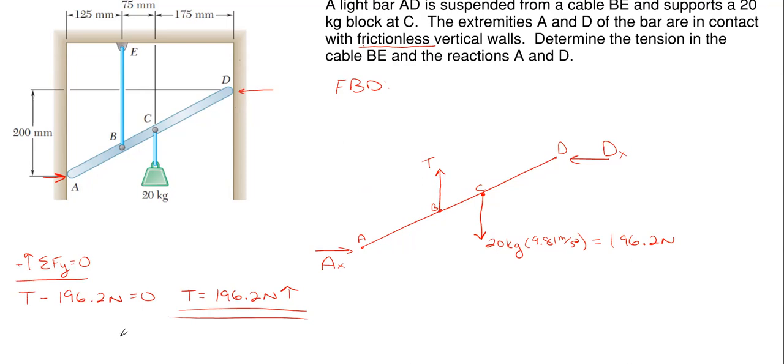Let's work on getting our reactions A_X and D_X. We can't just sum forces in the X direction because A_X and D_X are the only ones in the X, so we really can't solve anything that way. What we can do is use our third equation of equilibrium, which is summing moments about a point. Let's sum moments about A.